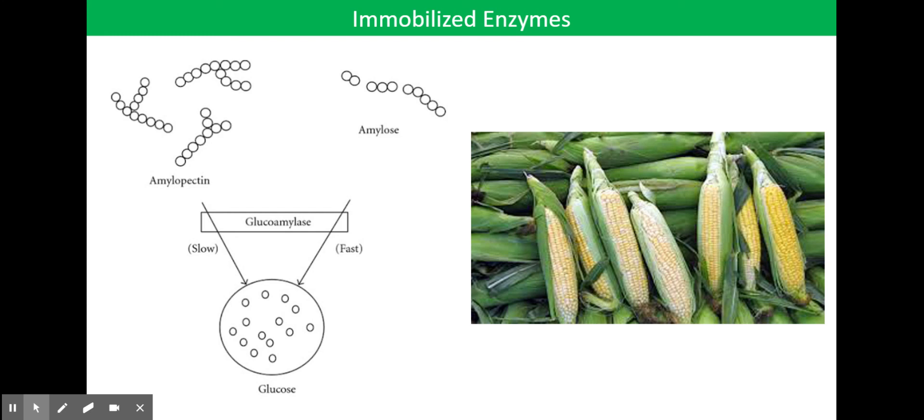Hydrolysis by glucoamylase can convert these dextrins to glucose. Glucoamylase can be immobilized on a variety of surfaces and used to digest sources of starch, such as corn.